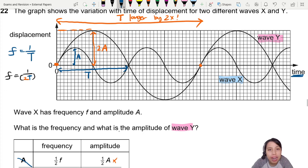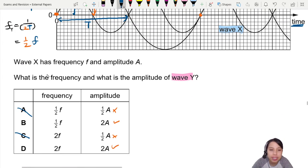2 times longer period, which means half the frequency of the original. So here I can write it as this wave Y is half of 1 over T, which is the original F. So half of the original F. So best answer here, half F on this side.